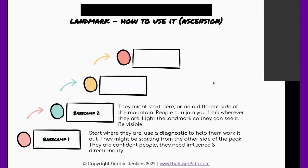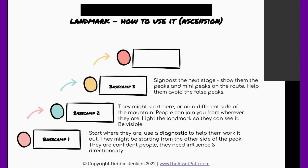The thing about having this flag — this light at the top of the mountain that they're heading towards — is that light needs to be really bright so that they can see it from wherever they are. And when they're on that route, if you imagine base camps, like if you're doing Everest or wherever.